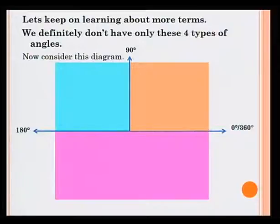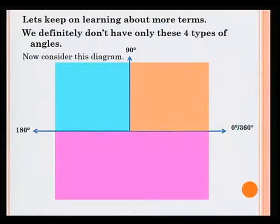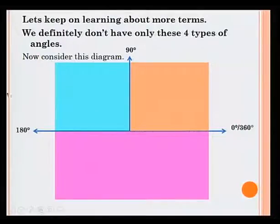Let's keep on learning about more terms. We definitely don't have only these four types of angles — complete turn, right angle, straight angle or three quarters of a turn. Consider this diagram. It is divided into three parts: the first part is from 0 degrees to 90 degrees, the second part from 90 degrees to 180 degrees, and the third part from 180 degrees to 360 degrees.